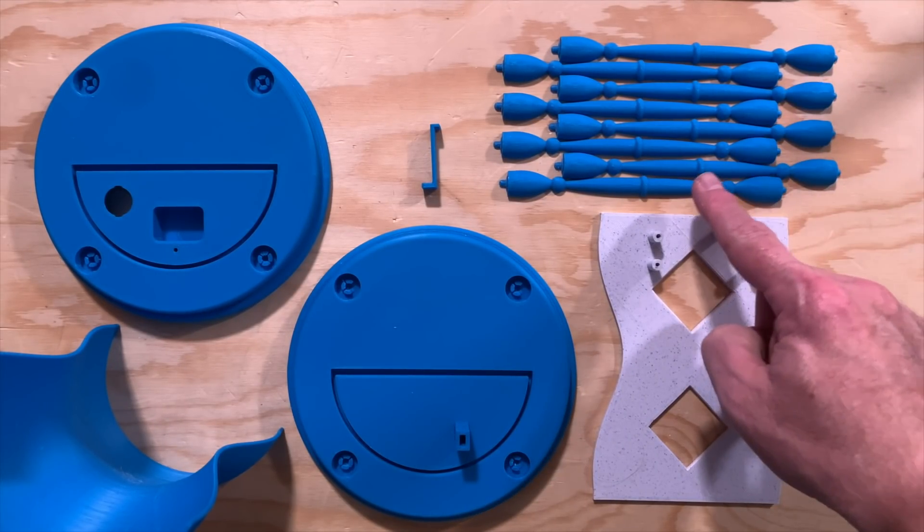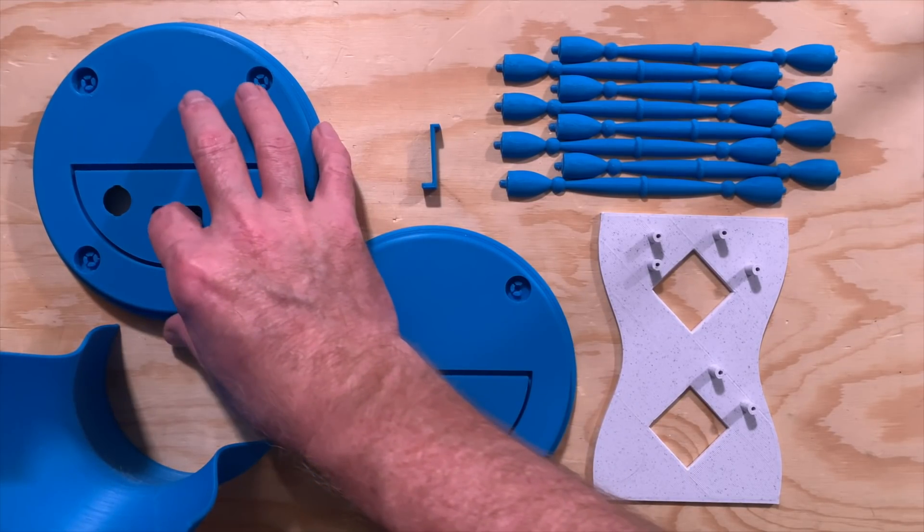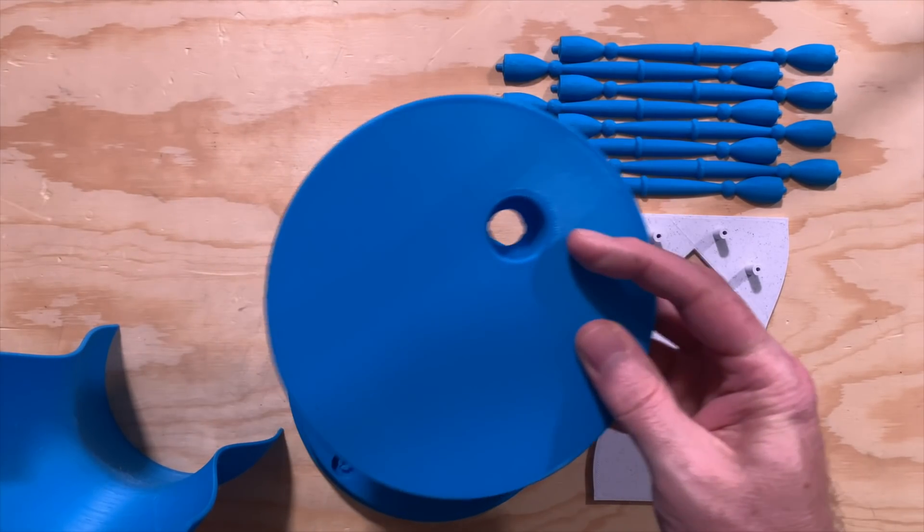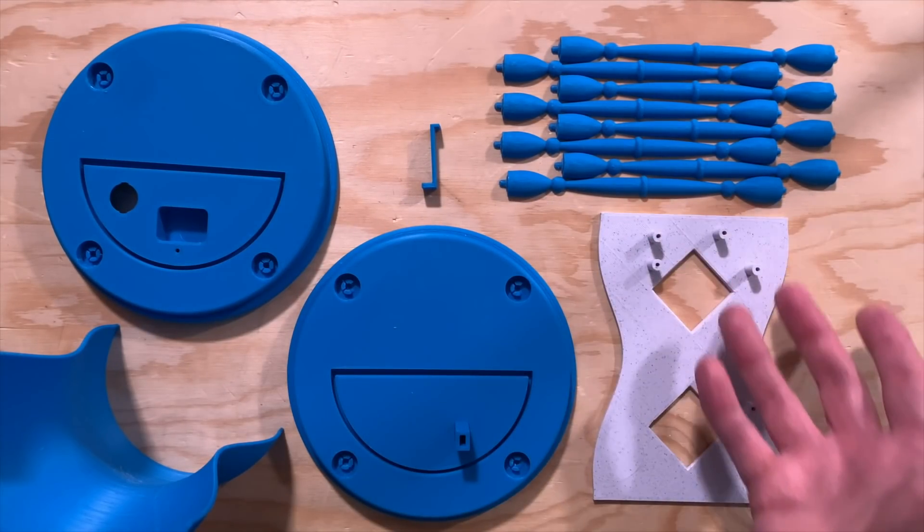You'll also need to print eight of the pillar halves, which will combine to become four pillars connecting the top and the bottom. The only part that'll need to have supports enabled is the top, and that's just for the part where the power switch goes.